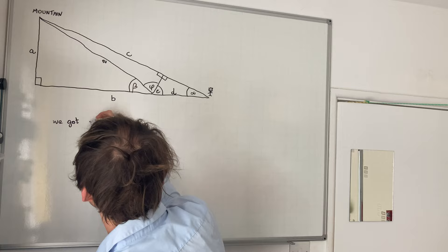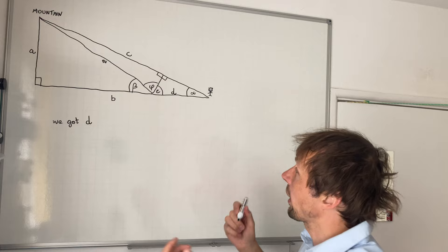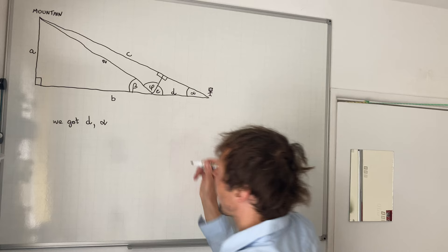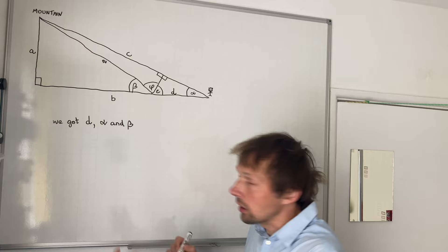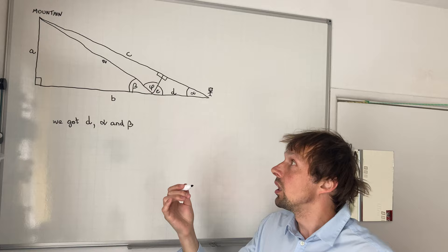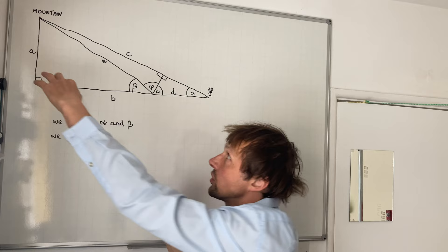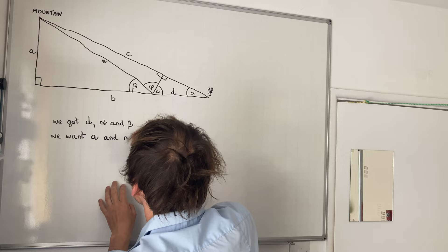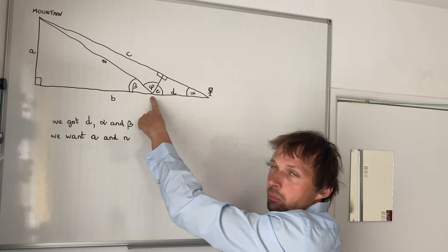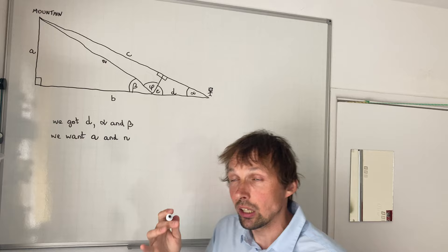To summarize what we have: d is the distance — one step, to keep it simple. We have angle alpha and angle beta. From just these three values we are able to calculate the size of the mountain — both its height and distance. So we want a, the height of the mountain, and n, the distance to the mountain top from our position.